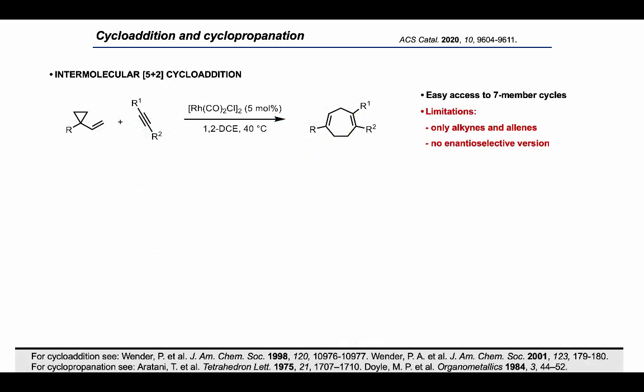Among the several methods that have been developed for the preparation of seven-membered cycles, the rhodium-catalyzed 5+2 cycloaddition really stands out for its efficiency. It was extensively developed by the group of Paul Wender, who also demonstrated its utility in the total synthesis of several molecules. In this reaction, the 5-carbon component is a vinyl cyclopropane, or VCP, which undergoes ring opening and then addition to a pi system, which can be either an alkyne, an allene, or an olefin, although the latter is limited to the intramolecular version of the reaction, where it is tethered to the VCP.